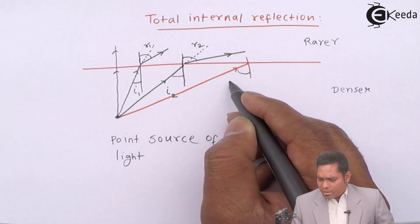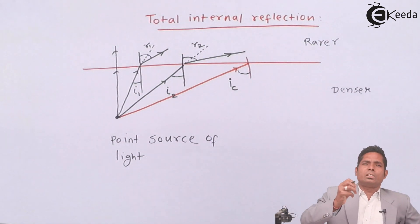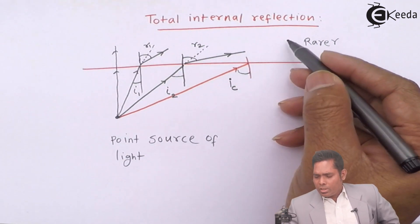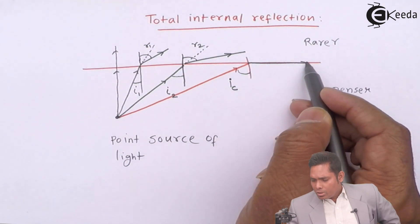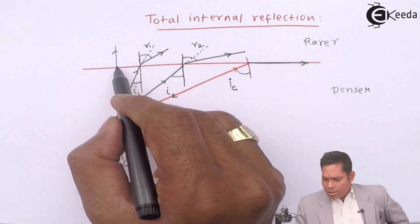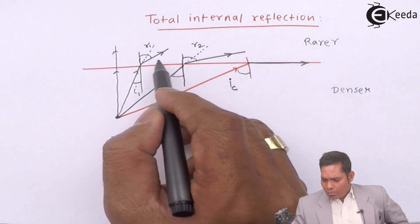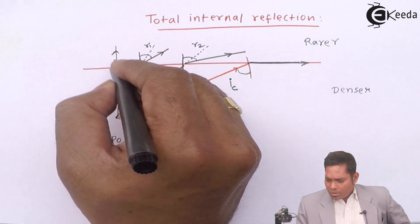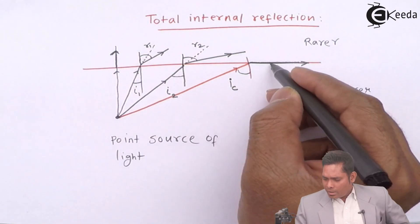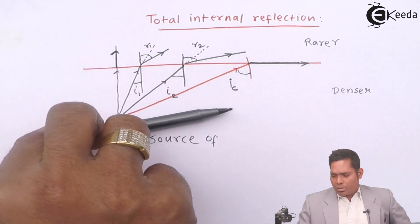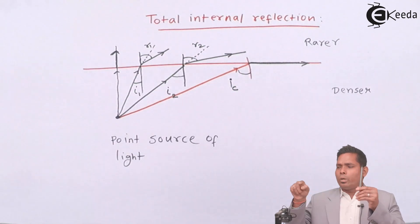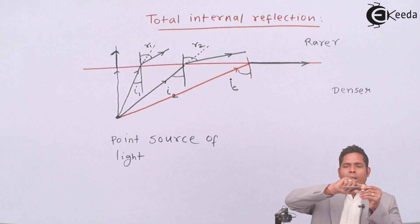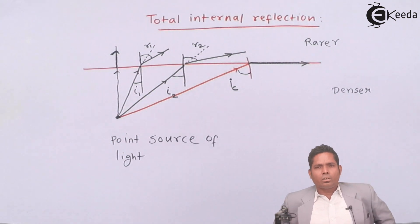At a particular angle of incidence — let's call it the critical angle IC — the refracted ray will not come out into the rarer medium; it moves along the surface. You can see the refracted ray rotating: initially nearly vertical, then bending more and more clockwise, until it grazes along the interface.